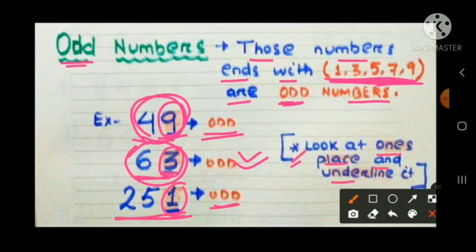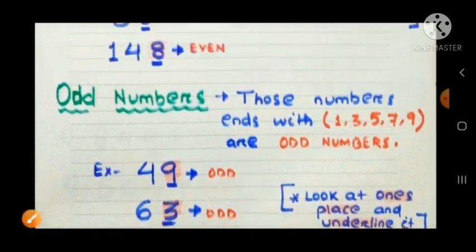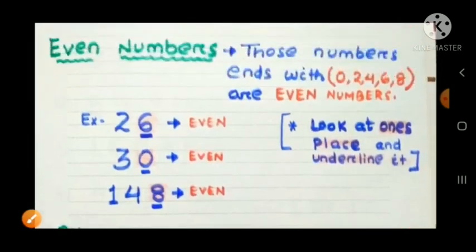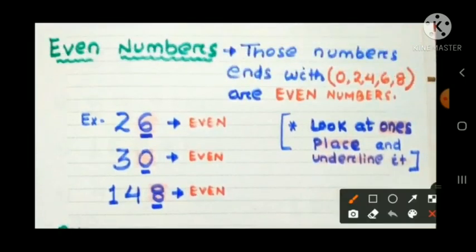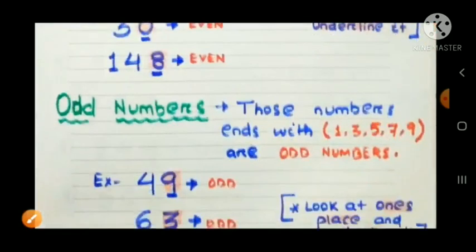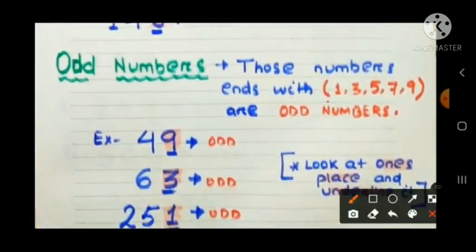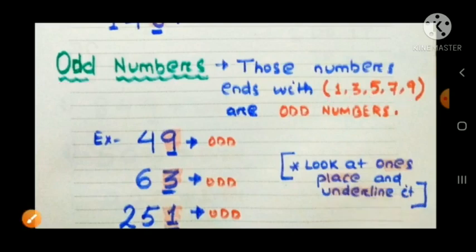Here also we follow the same rule: look at the ones place and underline the number to check if it is even or odd. If the ones place has 0, 2, 4, 6, or 8, the number is even. If the ones place has 1, 3, 5, 7, or 9, the number is odd.